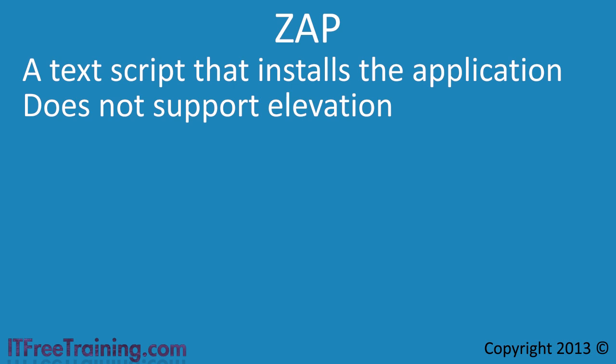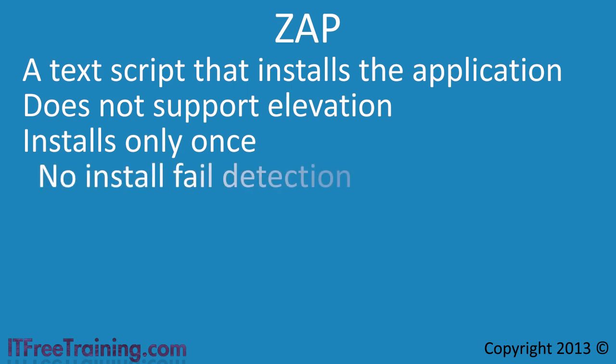Software that uses a zap file cannot be reinstalled more than once on a computer. If the install fails, Group Policy does not attempt to install the software again. This is because Group Policy simply runs the commands in the zap file and has no way of detecting if the install was successful or not.